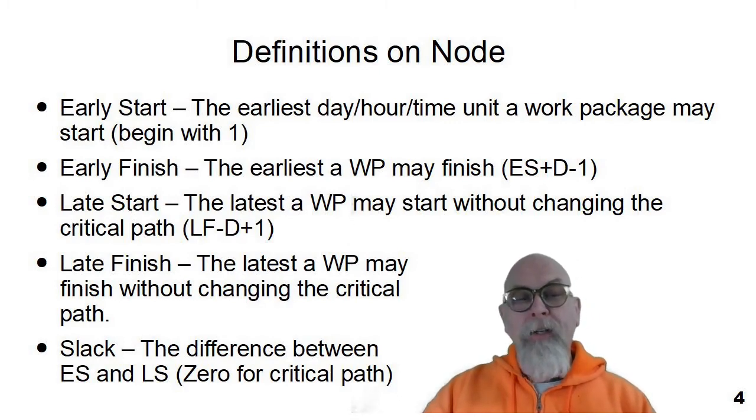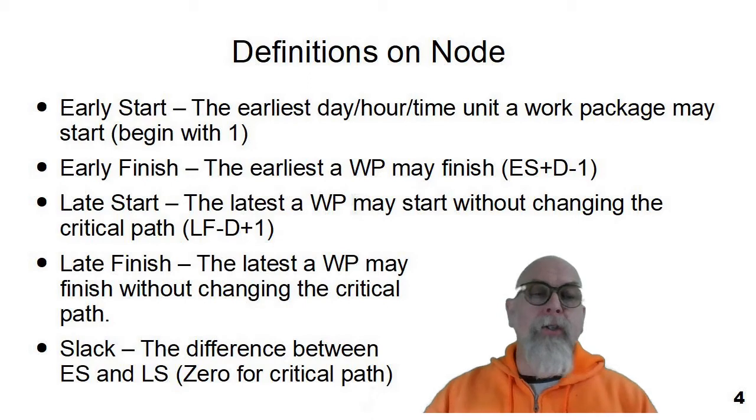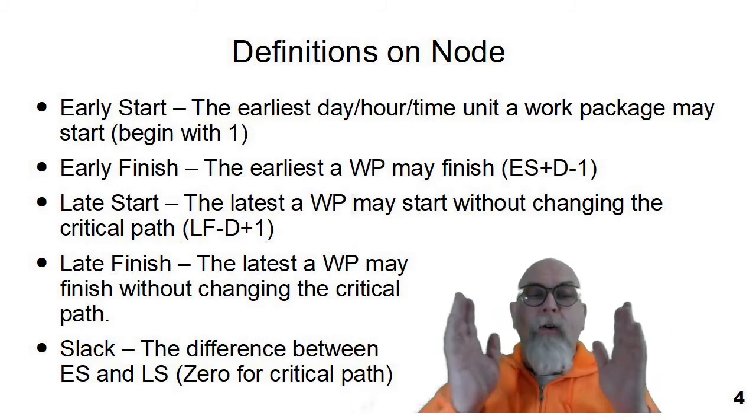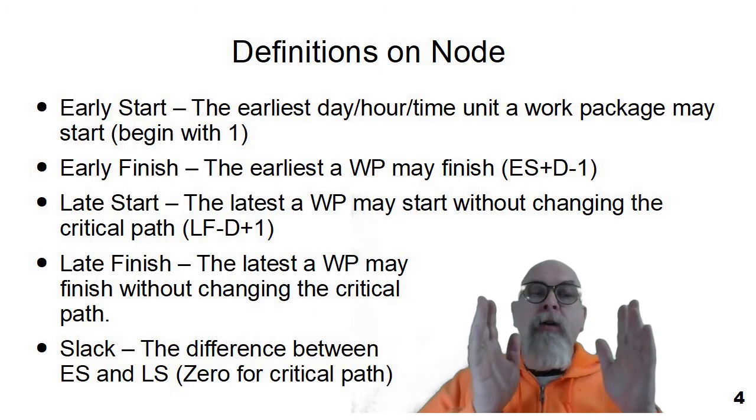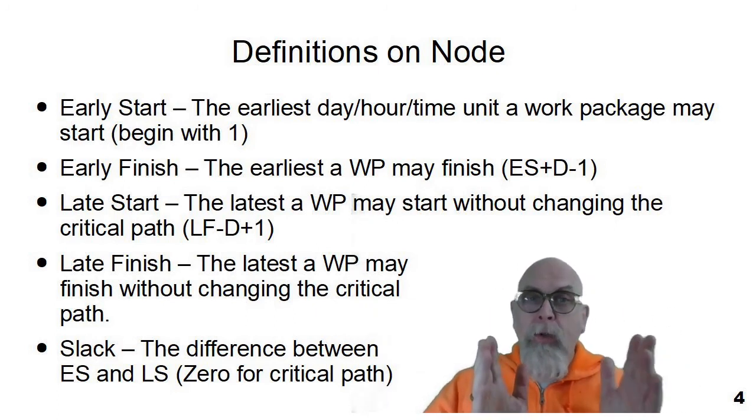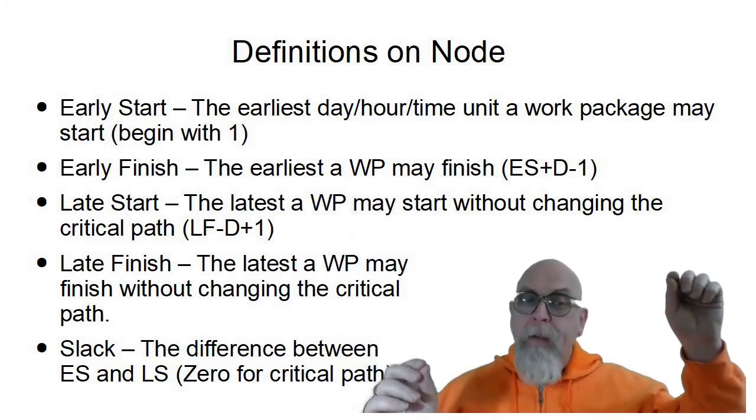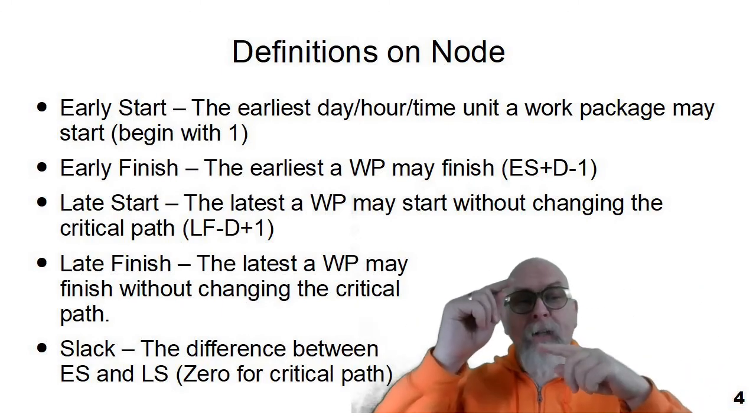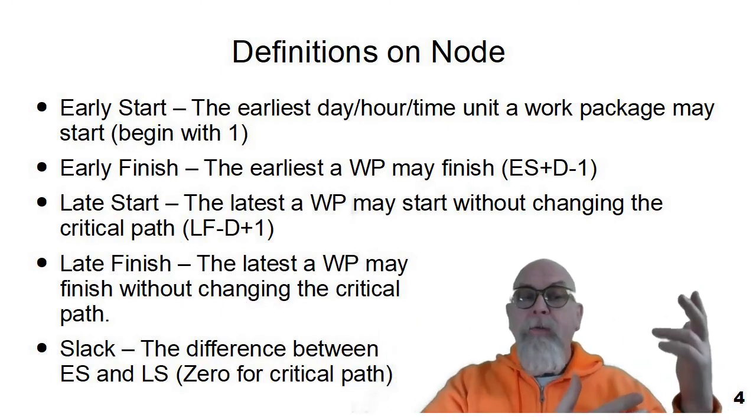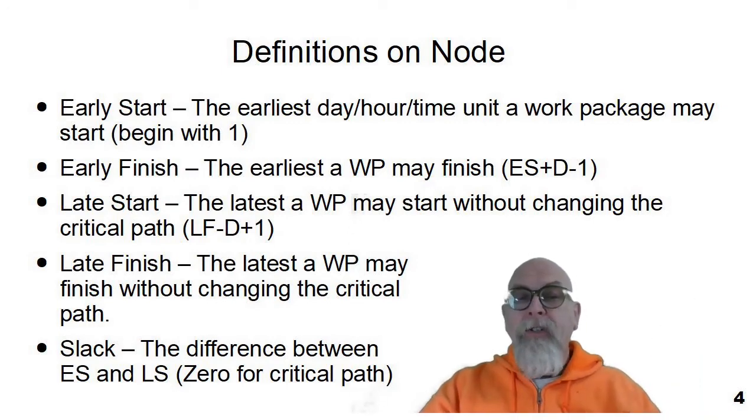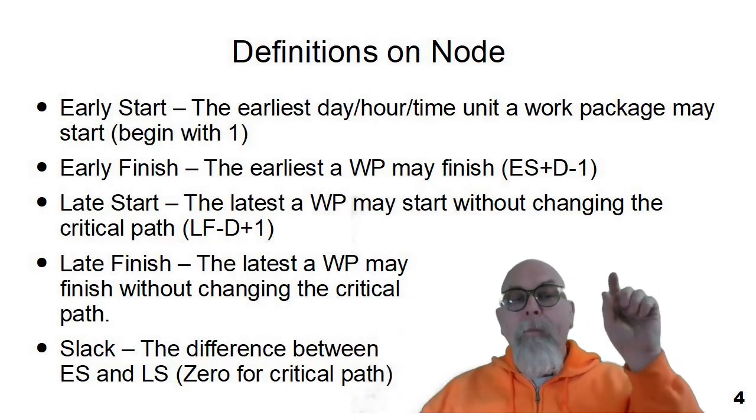The last number on the chart, the one in the bottom center, is something we call slack or float, and both are used in industry a lot. Slack is basically the difference between early start and late start. So it's the number of days that we have wiggle room when we can start that task without messing up our critical path. Items that are absolutely on the critical path would have a slack of zero because their early start and late start, their early finish and late finish would be the same.